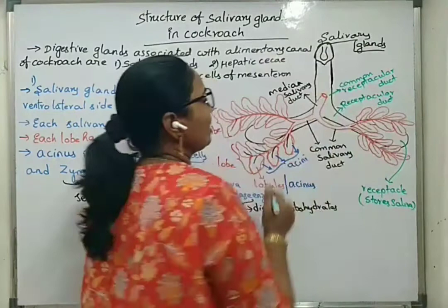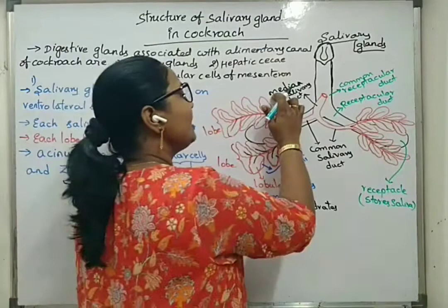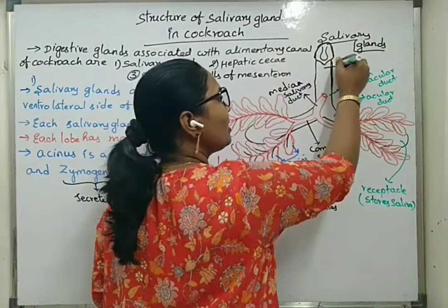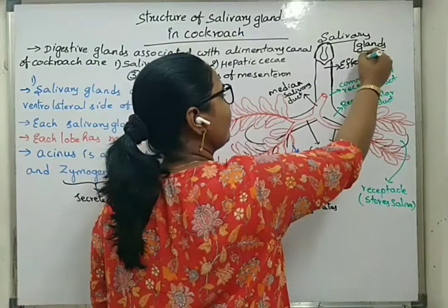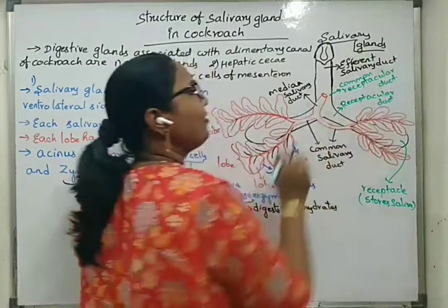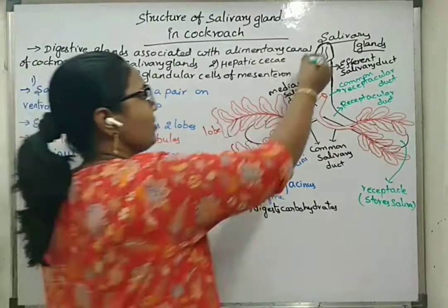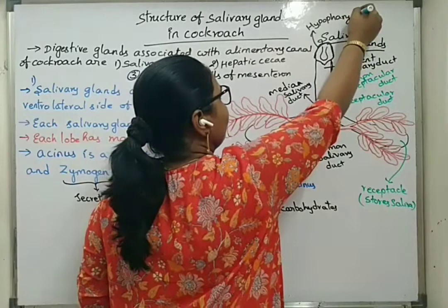The median salivary duct opens into the common receptacular duct. Both of them together open into the efferent salivary duct. The efferent salivary duct then opens into the hypopharynx.